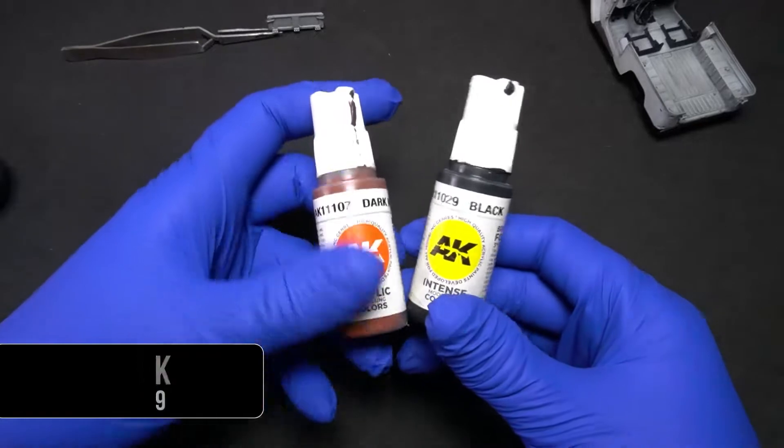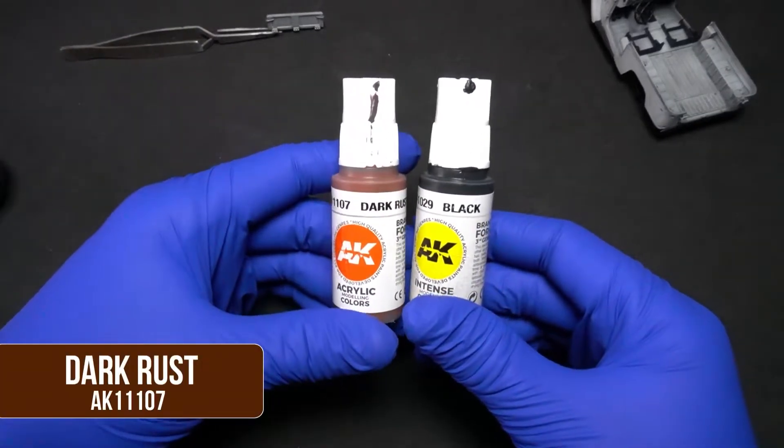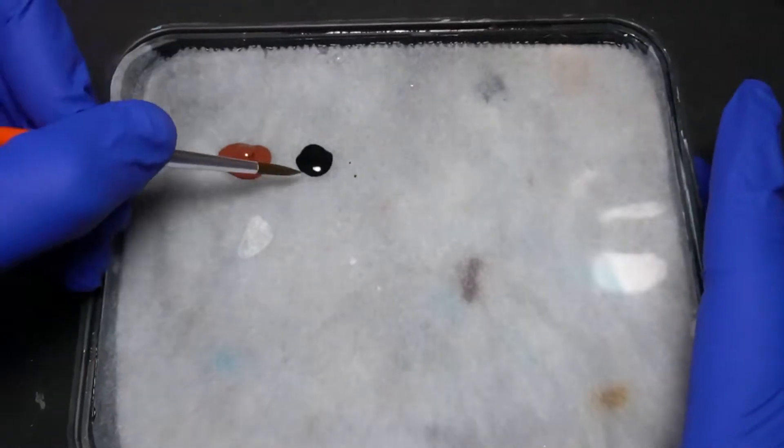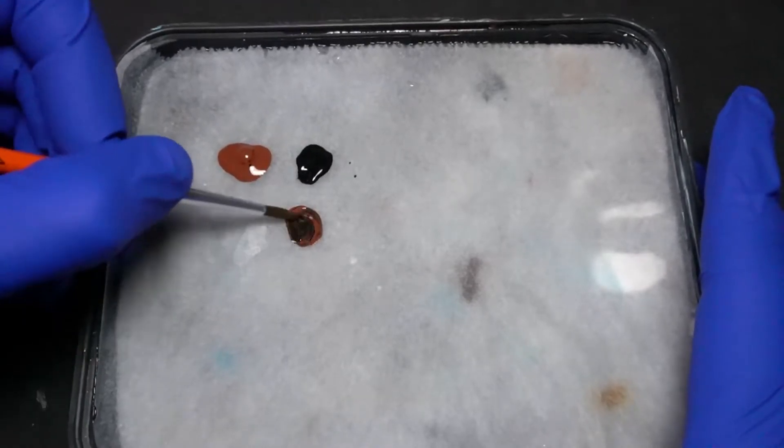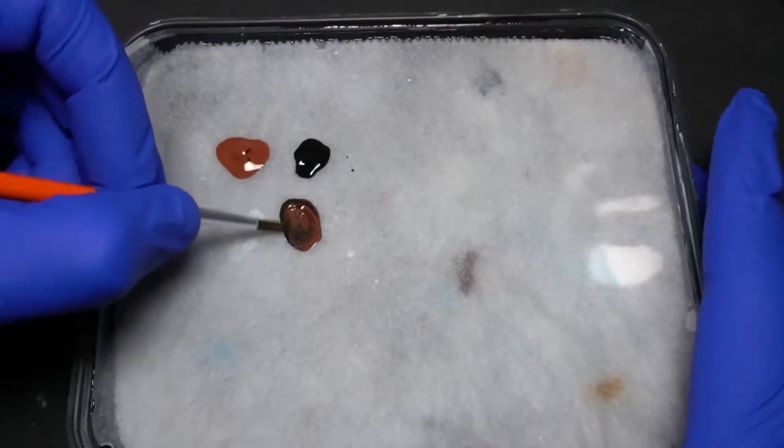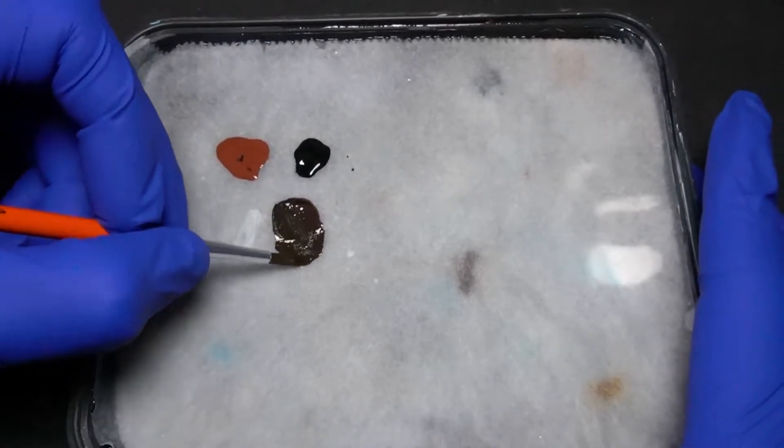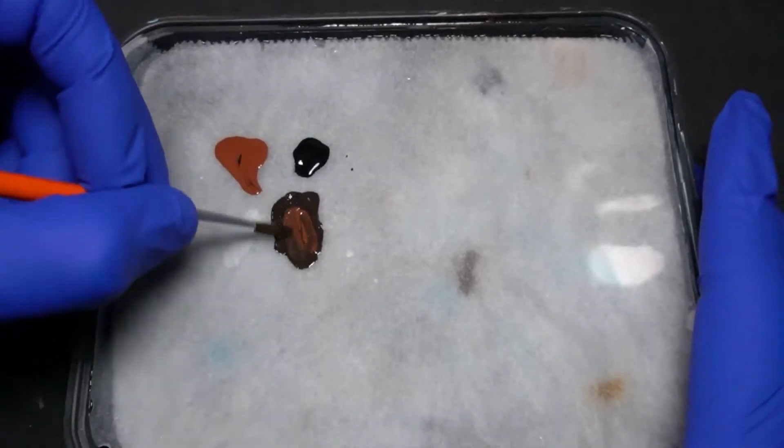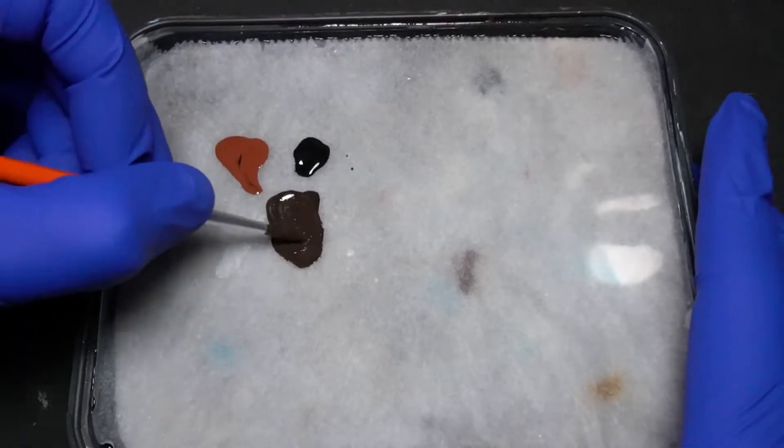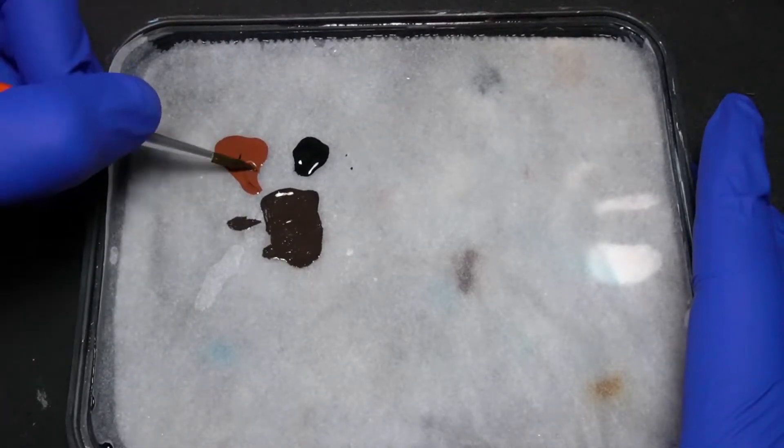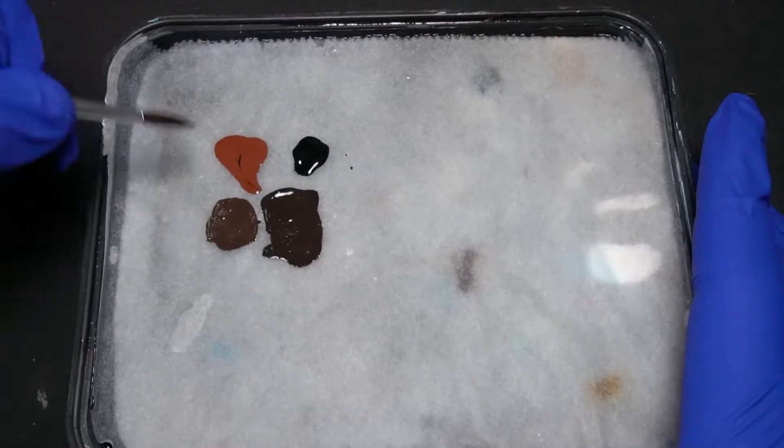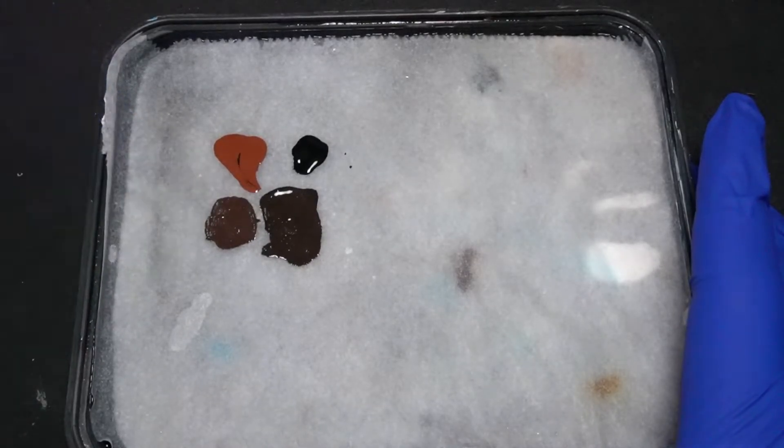Let's move on to chipping. For this step, we'll use exclusively these two colors, dark rust and black. As you can see, with these two colors we can make practically any rusty tone that we can think of. We only need to change up the proportion of the colors and we can achieve an incredible variety of different tones. So remember that these two colors are essential for working on rust effects.